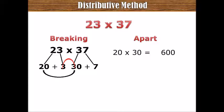Then, you multiply 3 by 30. 30 times 3 equals to 90.